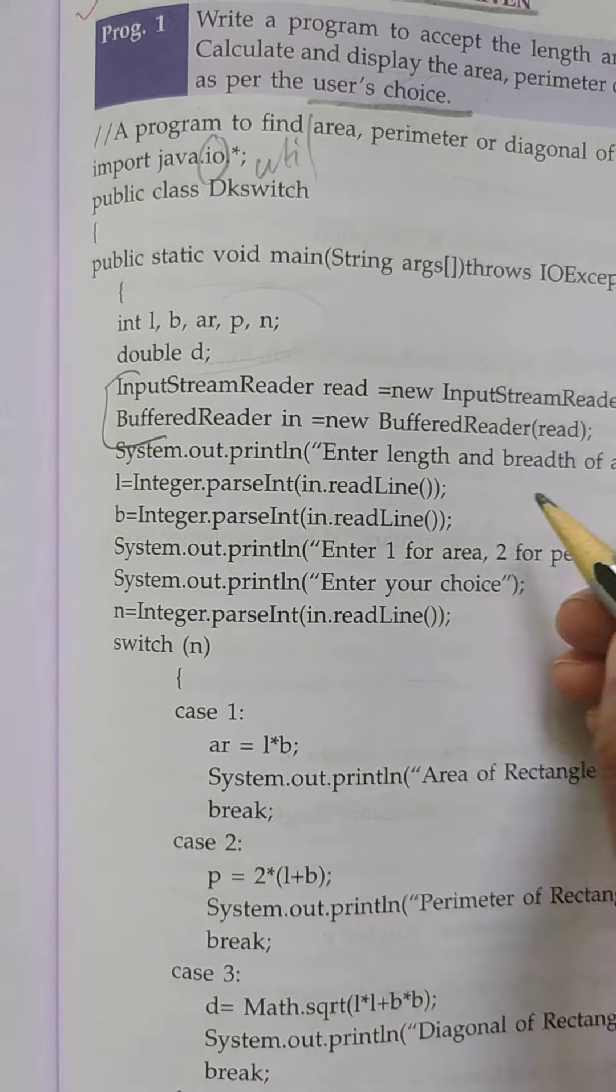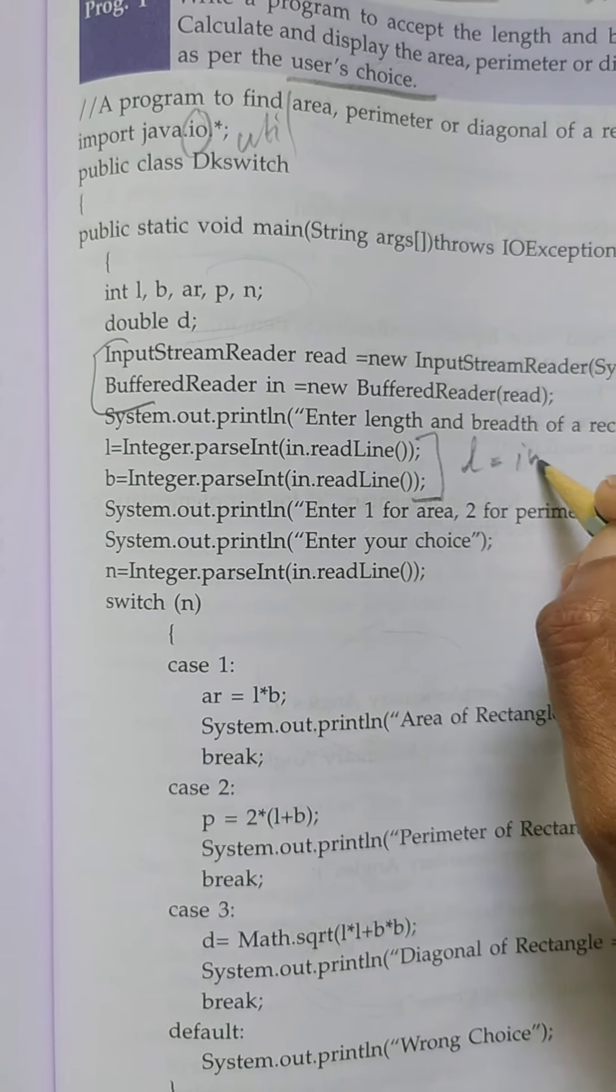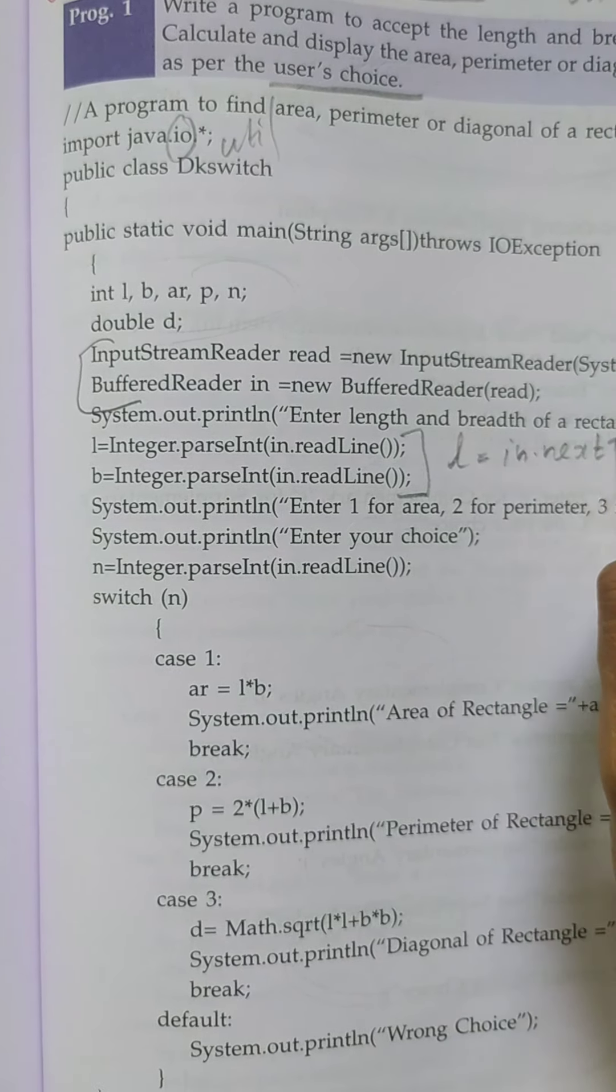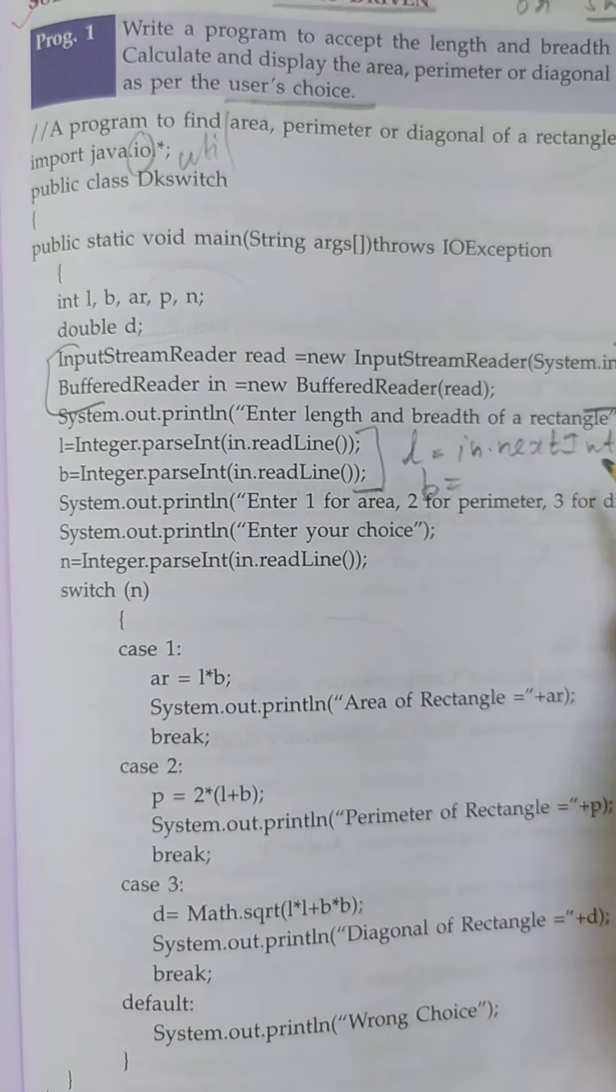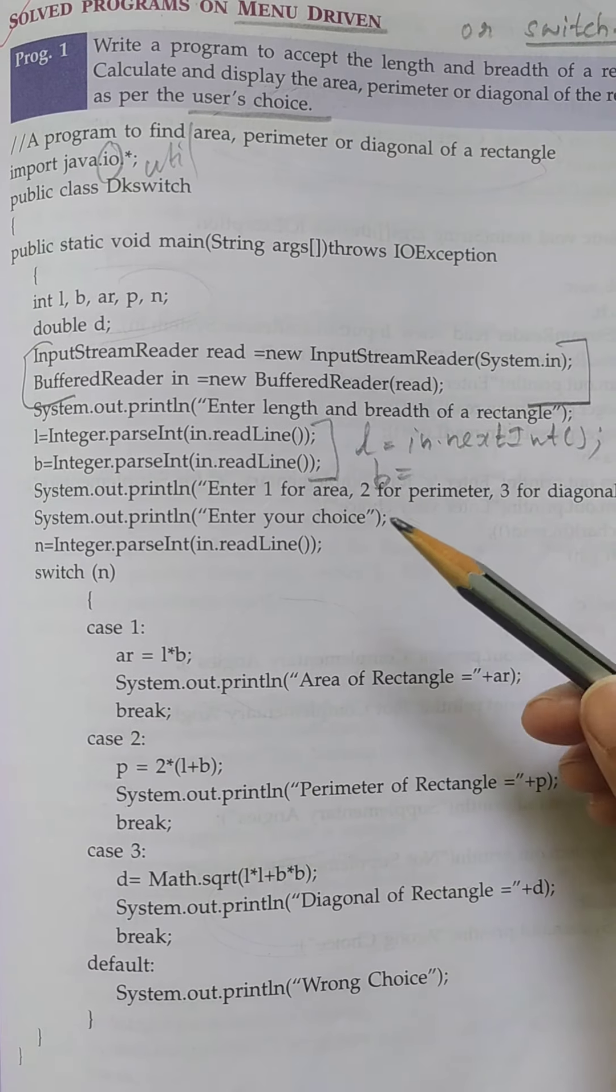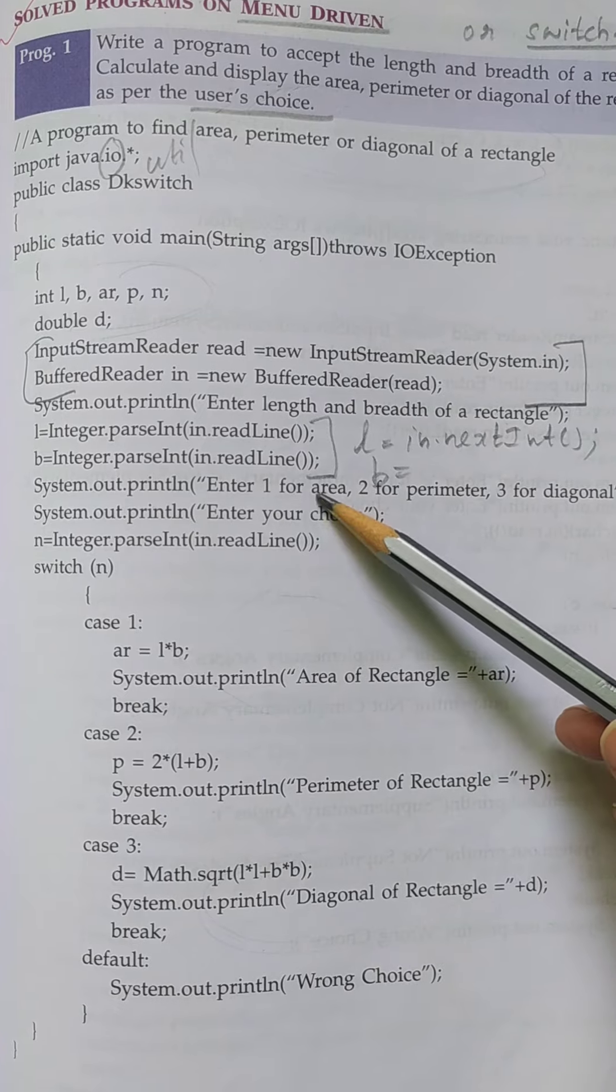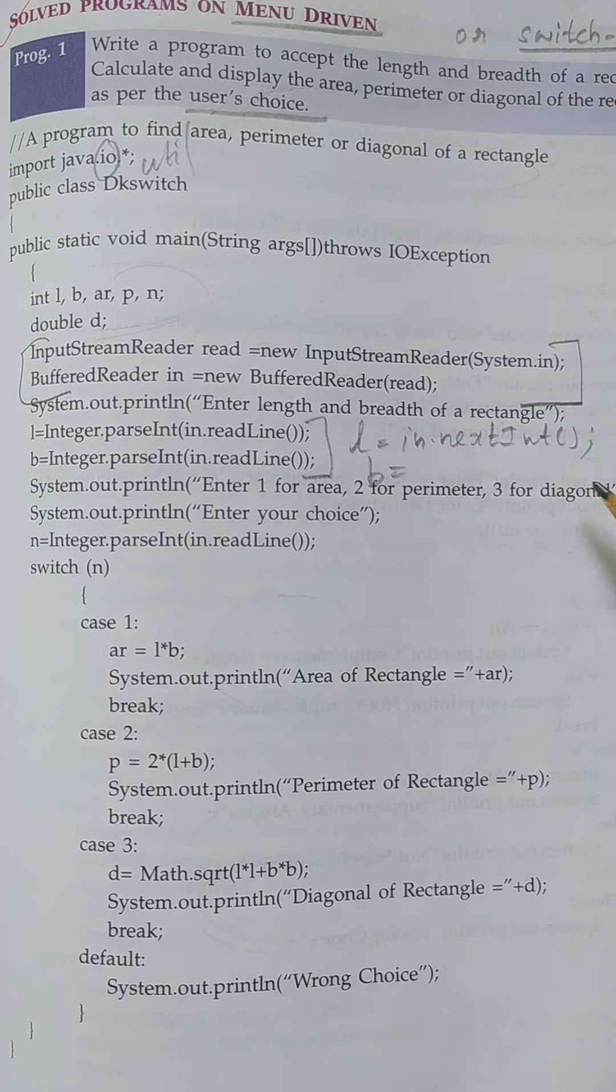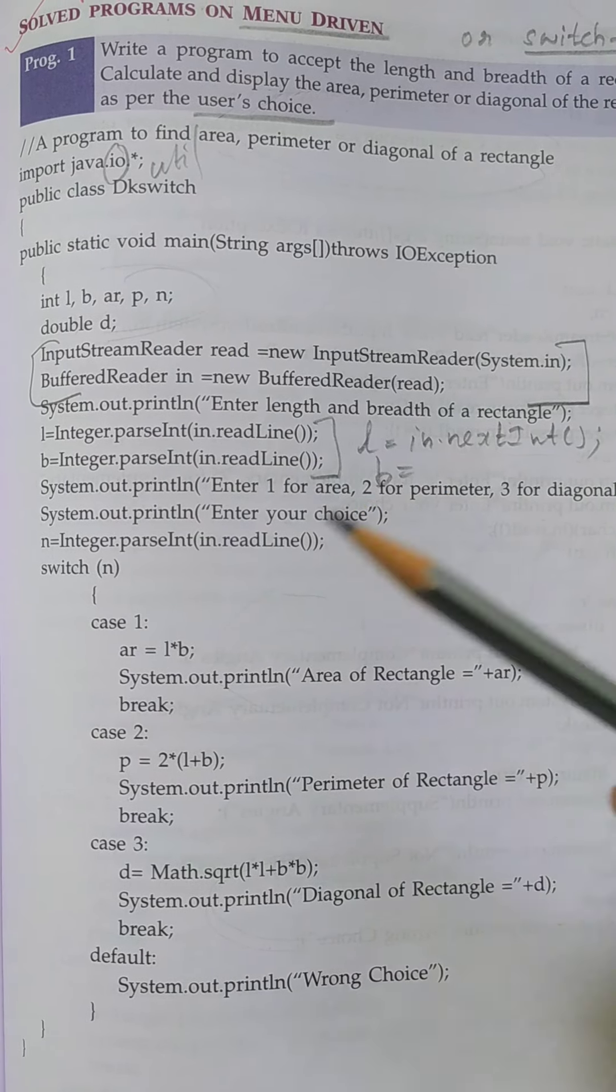I stored length and breadth into this variable. If you are using Scanner class, instead of this line you can use L = in.nextInt() and B = in.nextInt(). Next, you have to display for the user—it should be readable, no? One for area, two for perimeter, three for diagonal. Enter your choice.